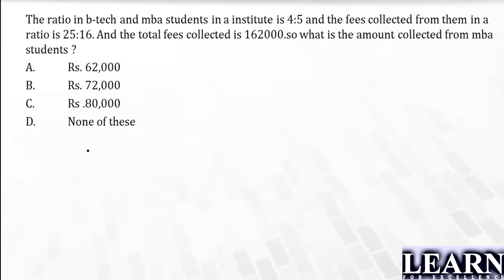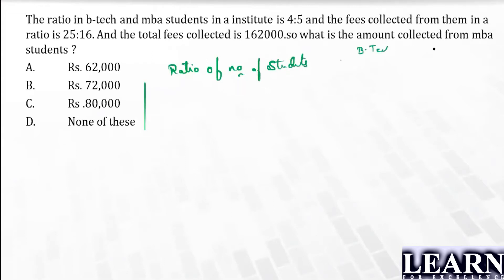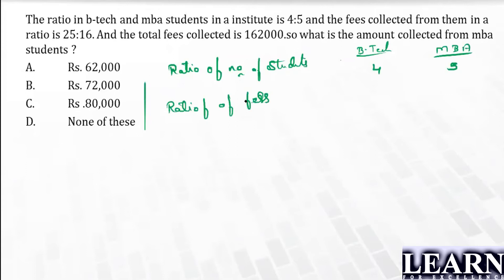If you multiply these two ratios, you will get the ratio of the total fees collected. The ratio of number of students — BTEC and MBA — is 4:5. Similarly, the ratio of fees is 25:16. This gives us the number of students and the fees collected.